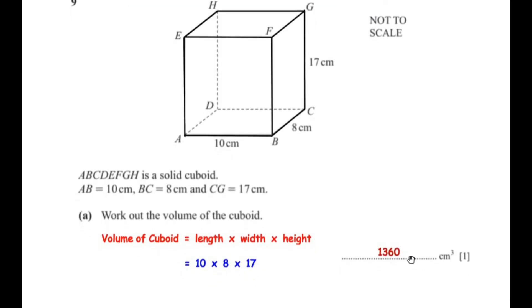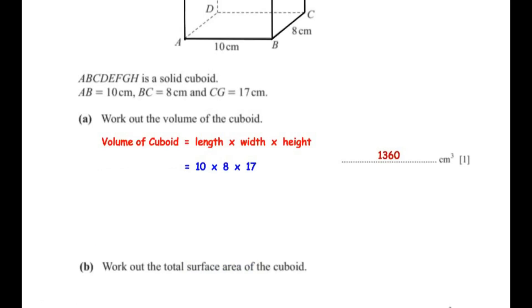The volume of the cuboid is 1360 cubic centimeters. Now let us move on to the next sub-question: work out the total surface area of the cuboid.